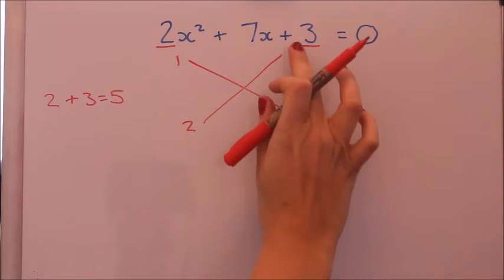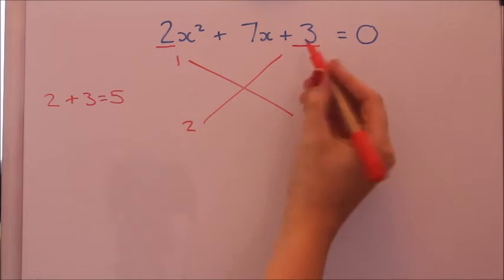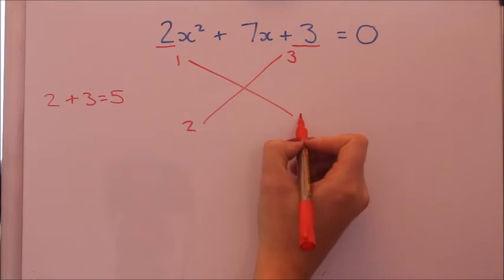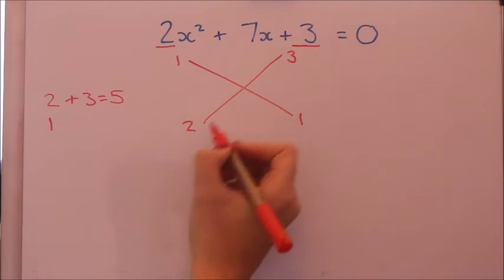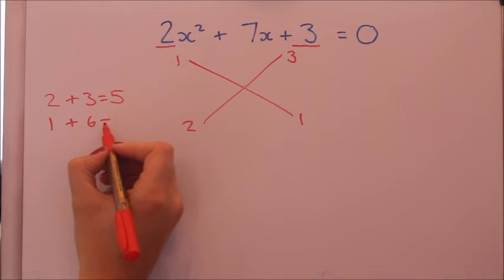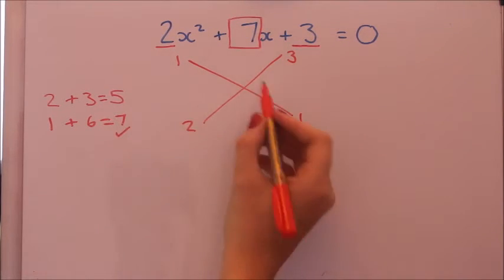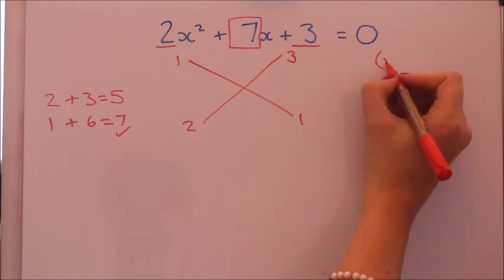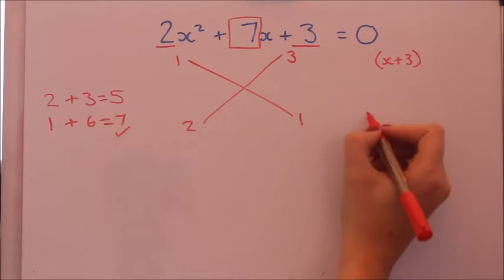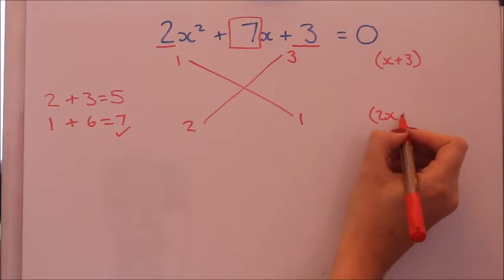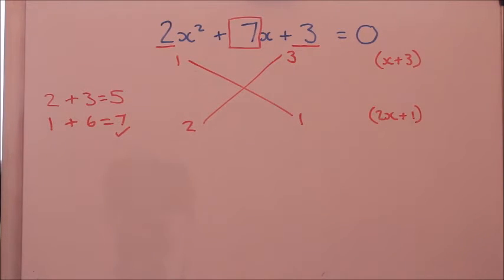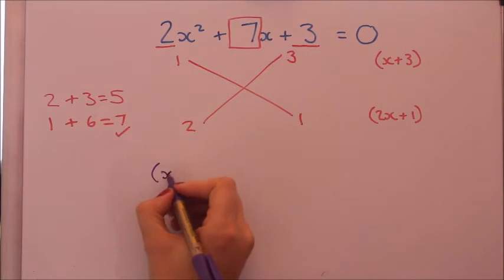So I'll try swapping these two around. Three and one. One times one is one, three times two is six. And yes, that works to give the seven. So those are the right numbers. The first bracket is one x plus three, and the second bracket is two x plus one.